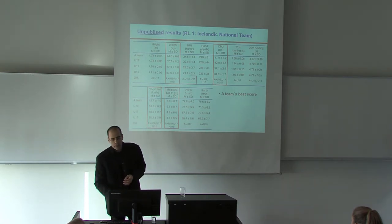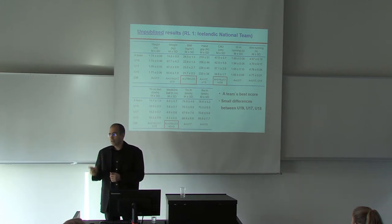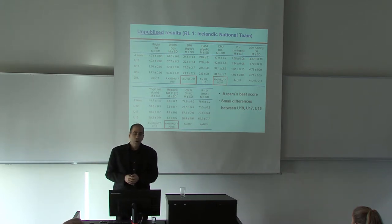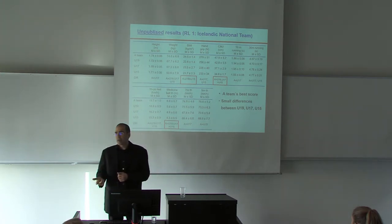But it's a little bit surprising. There are very few and very small differences between under 19, under 17, and under 15, only in three variables, body mass index, counter-movement jump, and medicine ball.